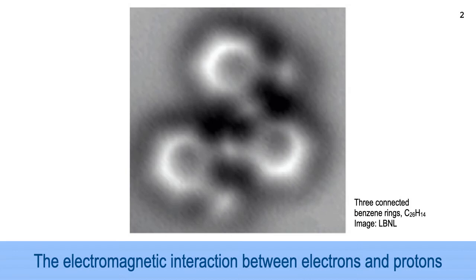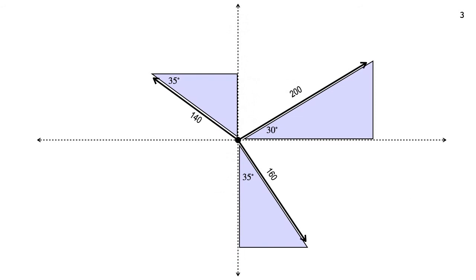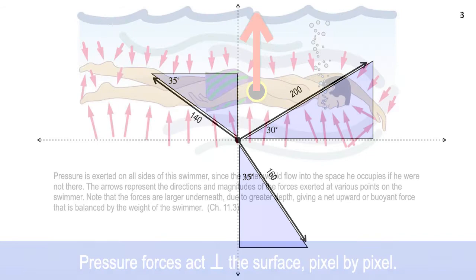In our first lecture of the semester, we talked about what we were doing. Our objective is principally to study the electromagnetic interaction, at its most basic level an interaction between electrons and protons. In our following lectures, we talked about the need to study trig and use trig, so we did some trig review.